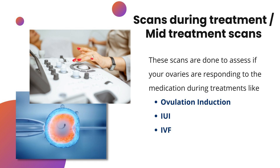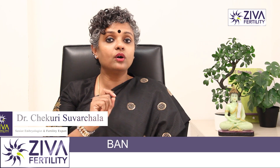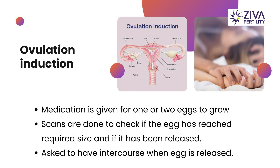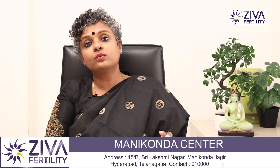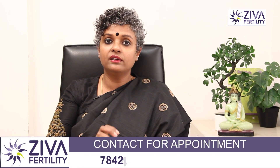There are also scans performed during treatment, whether you are going for ovulation induction, IUI, or IVF — these are called mid-treatment scans. For ovulation induction, very little medication is given for one or two eggs to grow, and you are asked to have intercourse at the right time when the egg is released. Scans are critical to know whether the egg size is right and if ovulation has occurred. For IUI, medication and sometimes injections are used, and ultrasounds are essential to monitor egg growth and determine the right time to put sperms into your uterus.